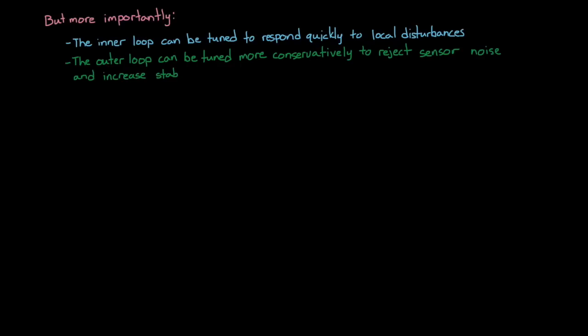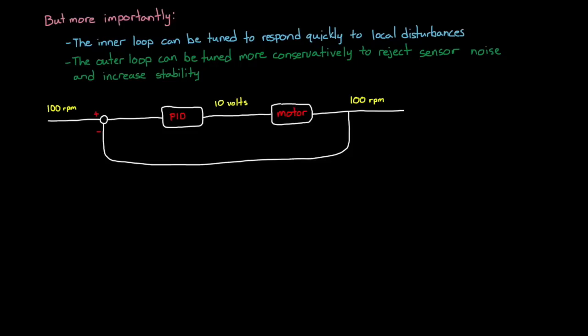The motor controller can respond quickly to local disturbances, whereas the altitude controller can be tuned conservatively to reject sensor noise and increase stability. For example, in cascade control, let's say that the propeller motor takes 10 volts to run at 100 RPM, which we'll say is the speed required to hover the drone. Now we add some disturbance in our loop. Maybe the battery voltage drops because another high current device in the drone is turned on. Or perhaps the lubricant in the motor bearings get hot and the resistance drops, requiring less voltage for the same speed. In both of these cases, the inner loop motor controller can sense this error and adjust the motor voltage in a fraction of a second, so that the propeller speed is barely affected.